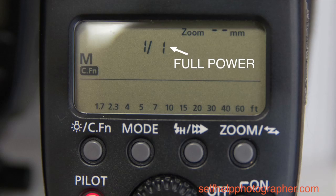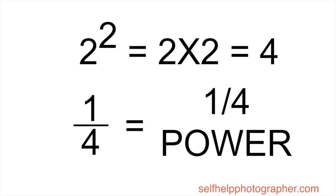As you remember from shooting manual flash, the power readings on the flash are set in fractions, and one over one is full power. At two feet from the light, the power is reduced to one quarter power, because two squared — two times two — equals four, and one over four equals one quarter power.